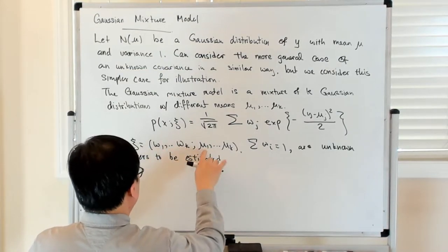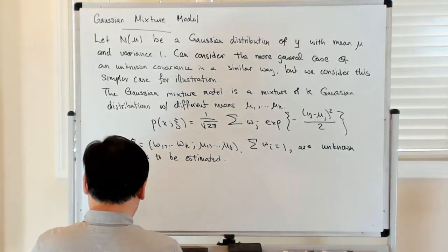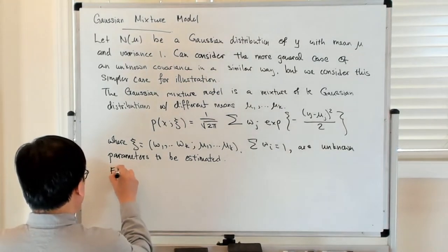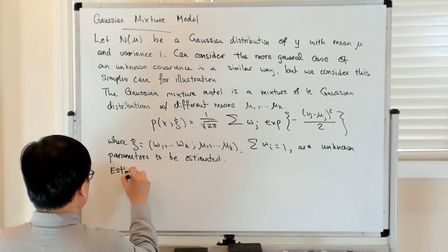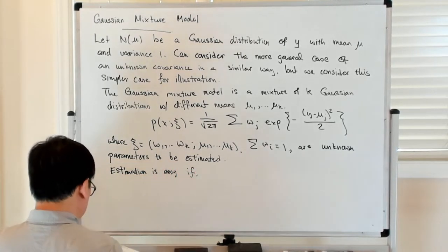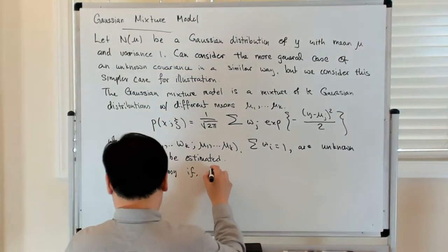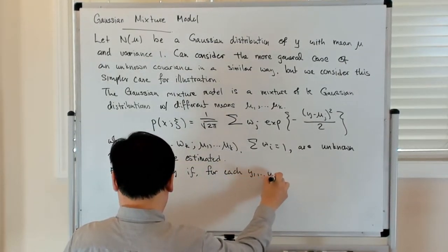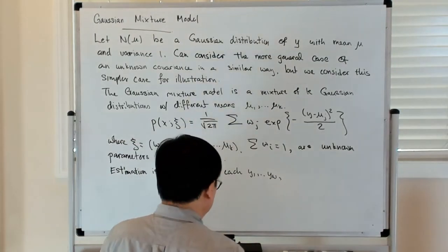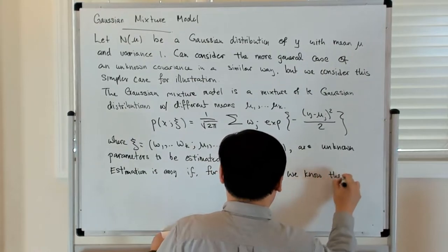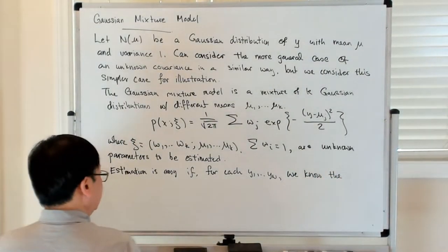So estimation is easy if for each of the y_i's we know the Gaussian distribution from which this is generated.